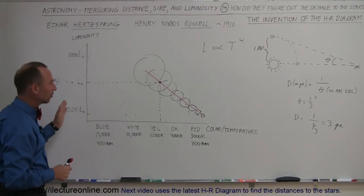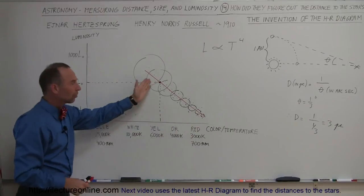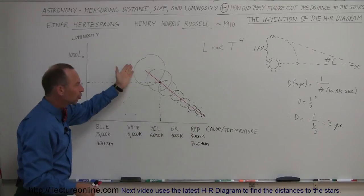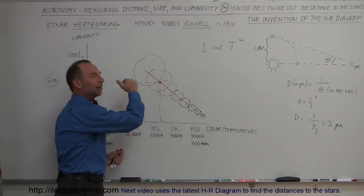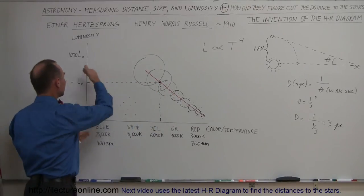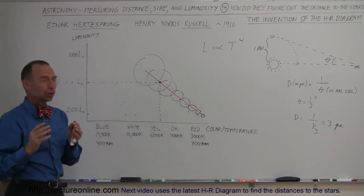So that was a tremendous discovery. Here they could see that there was a relationship that was able to be determined between the color and the size of the star, and therefore also the luminosity of the star. That was a huge discovery.